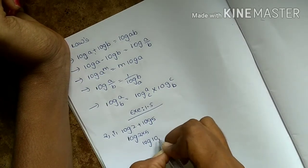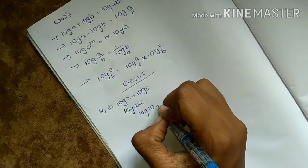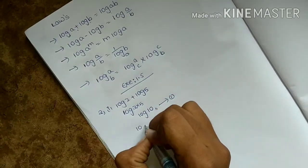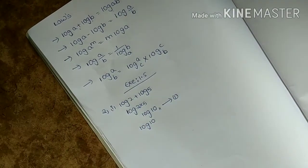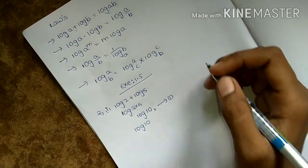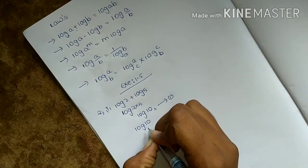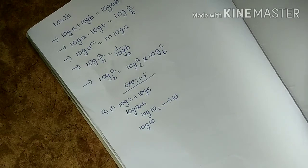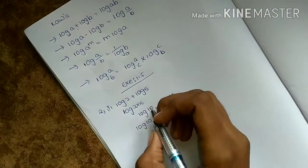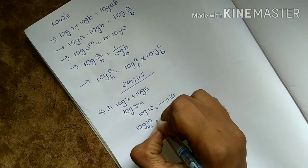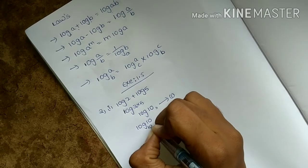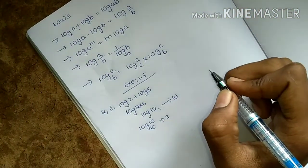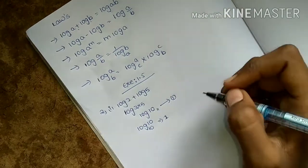So this gives us log 2 into 5, which is log 10. The answer is 1, because log 10 equals 1. So we choose 1 as the answer — log 10 to base 10 equals 1.